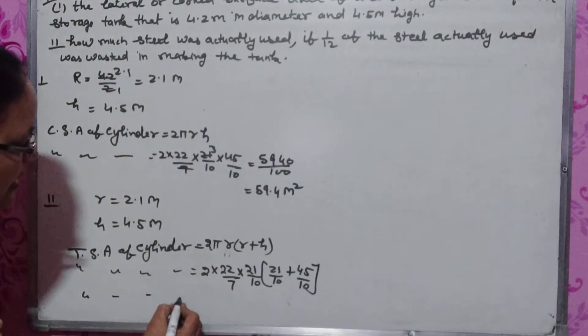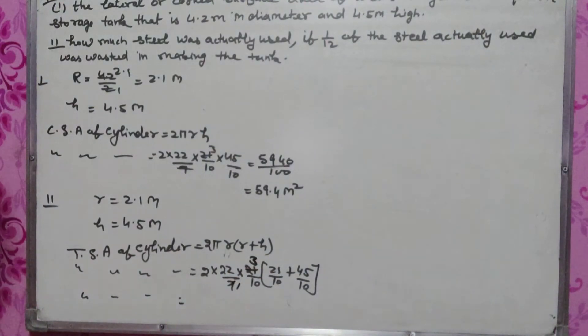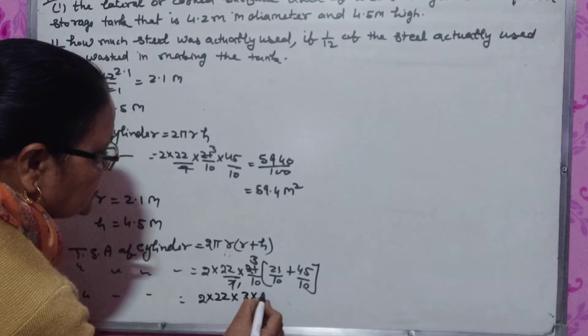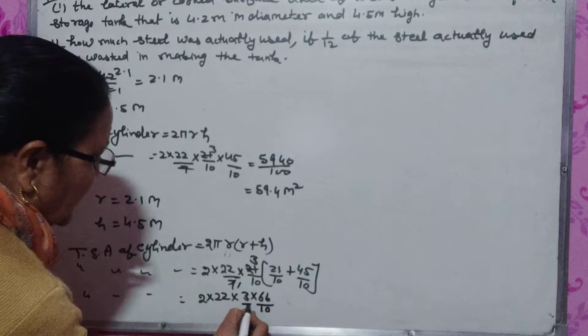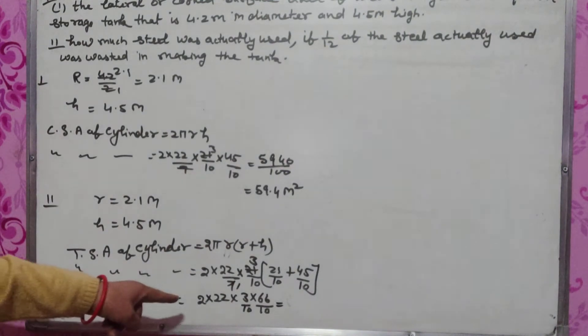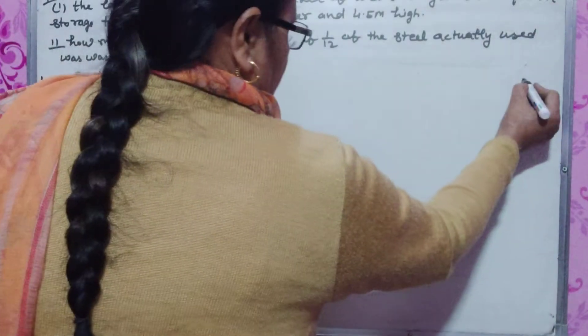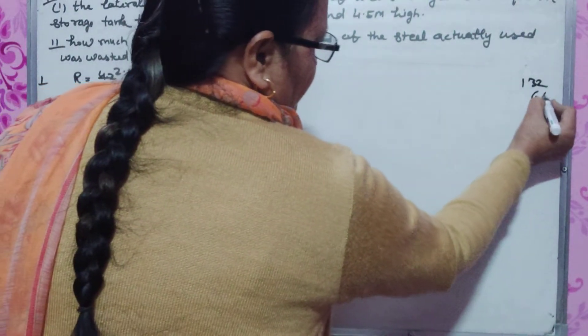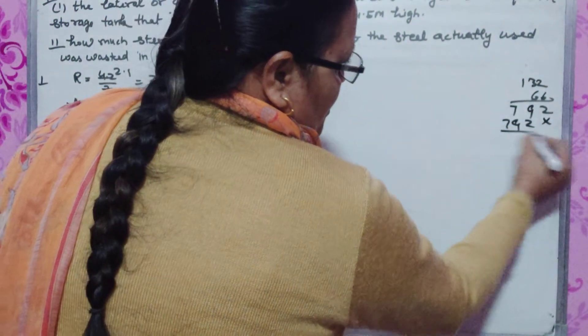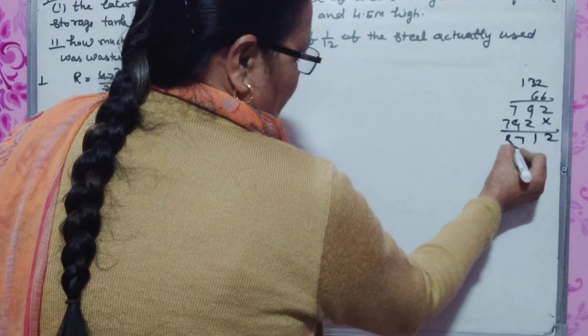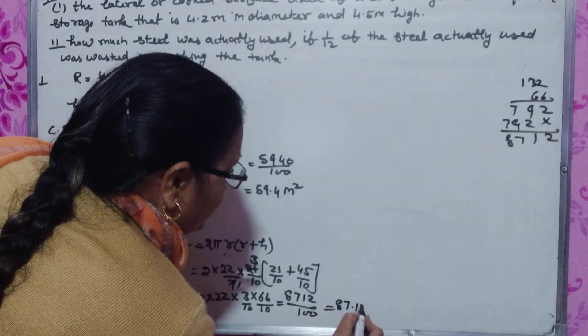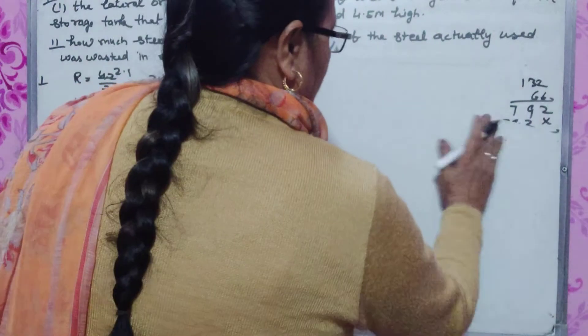Total surface area equals 2 times 22 by 7 times 3 times 66 by 10. Multiplying: 6 times 22 is 132, 132 times 66 by 2. This gives us 8712 by 100, which equals 87.12 meter square. This is the total surface area.